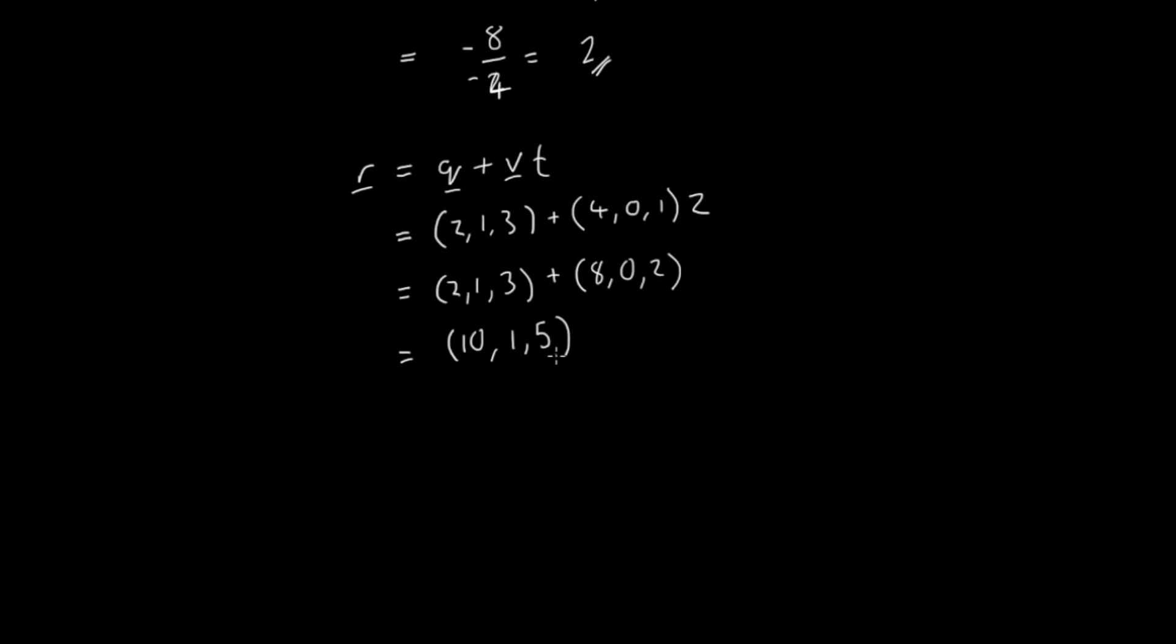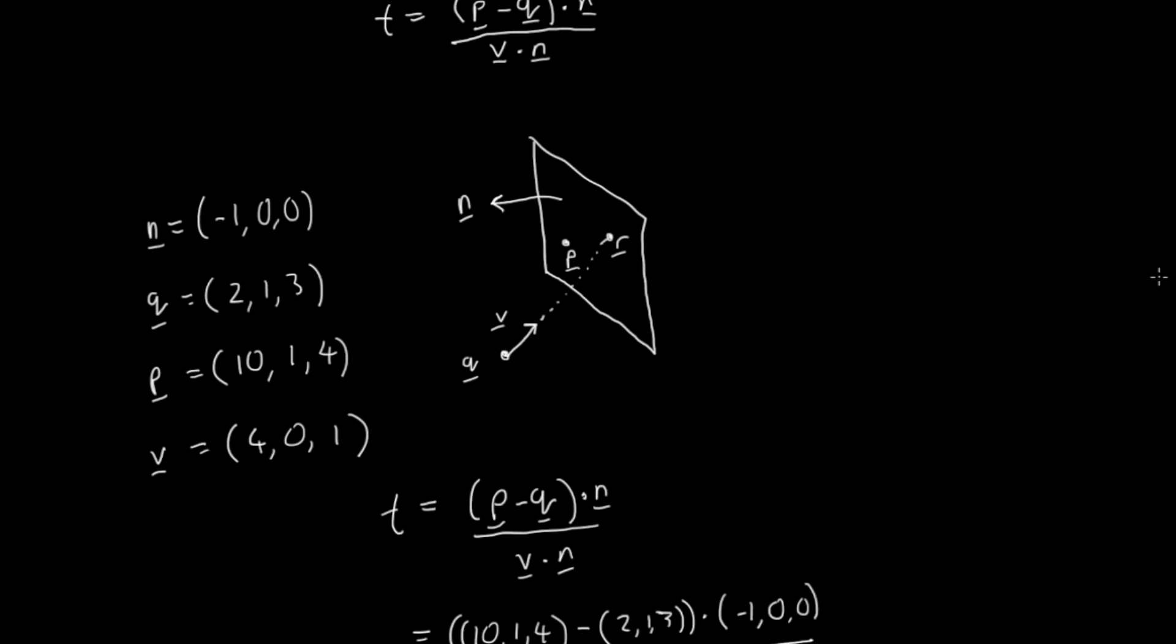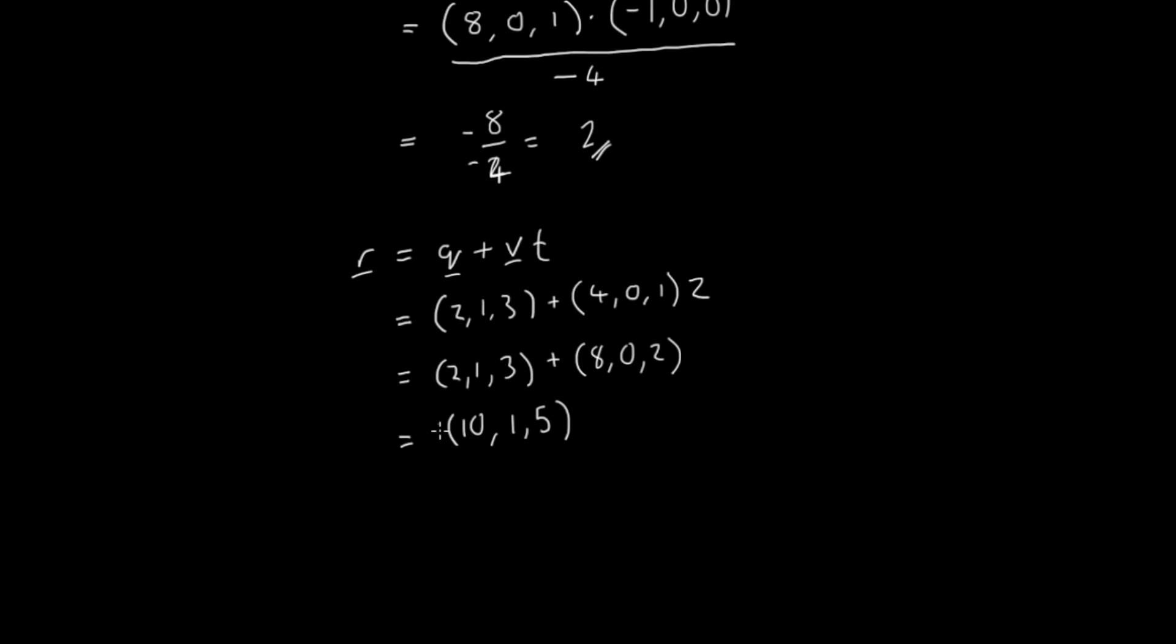So what that means is the position of the point where the line joins r and q where it intersects with the plane defined by p and n is equal, scroll down a bit again, is equal to this position vector here, these coordinates.